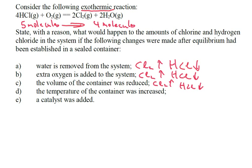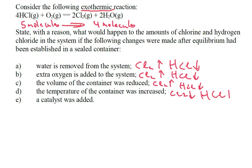If the temperature of the container was increased — and we know it's an exothermic reaction going from left to right, meaning heat is given out — if we increase the temperature even more, the system will oppose it and the equilibrium position will move back towards the hydrogen chloride and oxygen side. So we get less Cl₂ and more HCl.